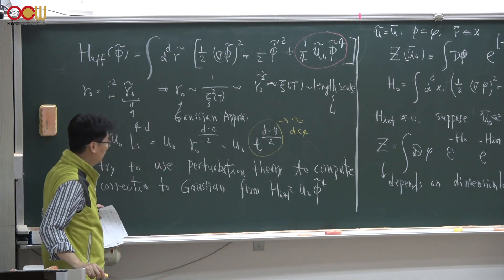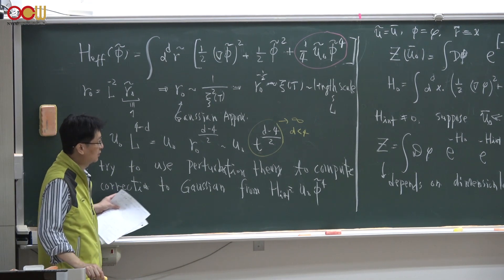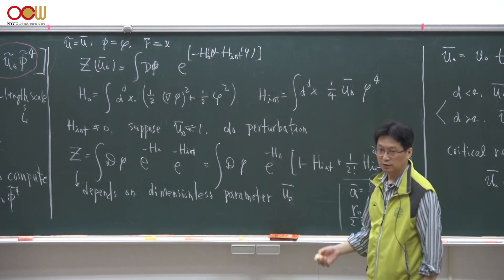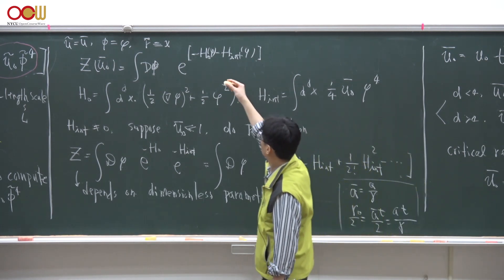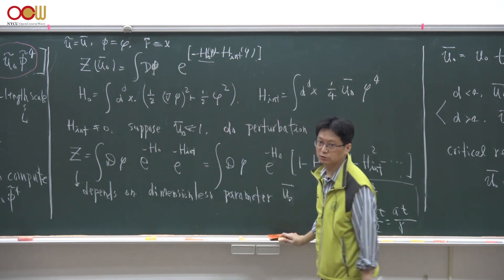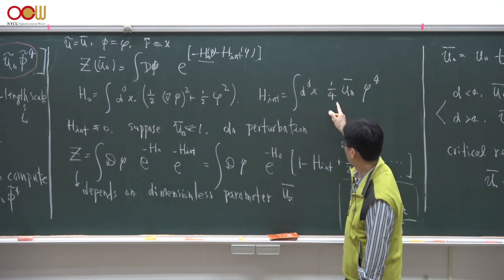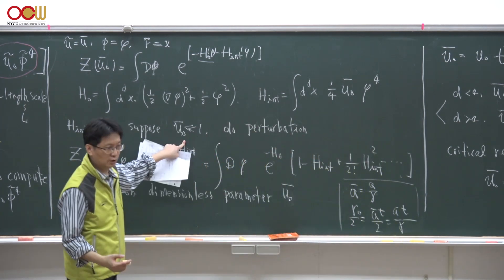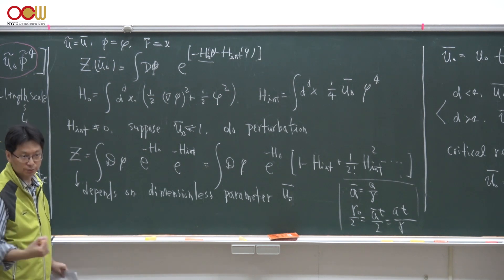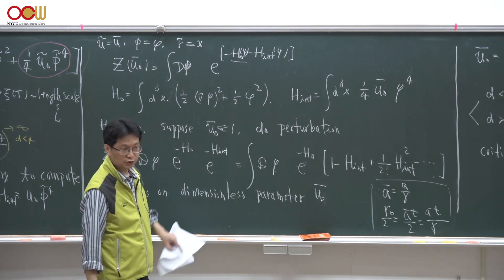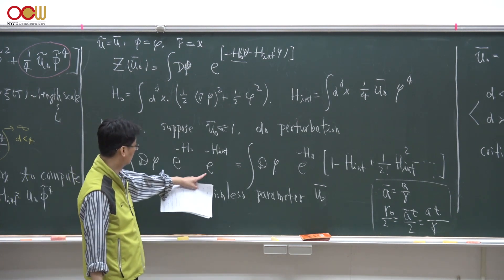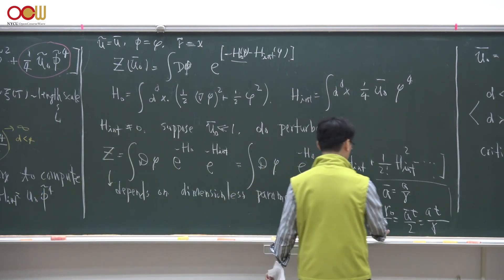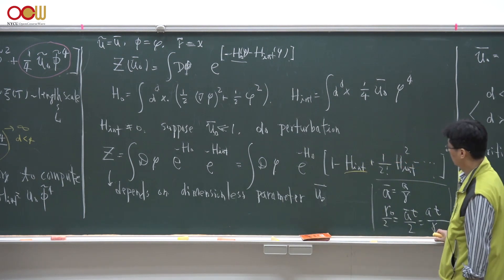This is precisely what I meant earlier — that perturbation theory fails. We decompose the effective Hamiltonian into H_0 (the Gaussian term) and H_int (the quartic term), treating H_int as a small perturbation. We Taylor expand e^{-H_int} in a power series of H_int keeping up to linear order. But the dimensionless coupling u_0-bar — which the partition function depends on — diverges as little t goes to zero for dimension less than 4. This means the perturbation theory fails because the coupling constant you want to expand about is already much larger than order 1.